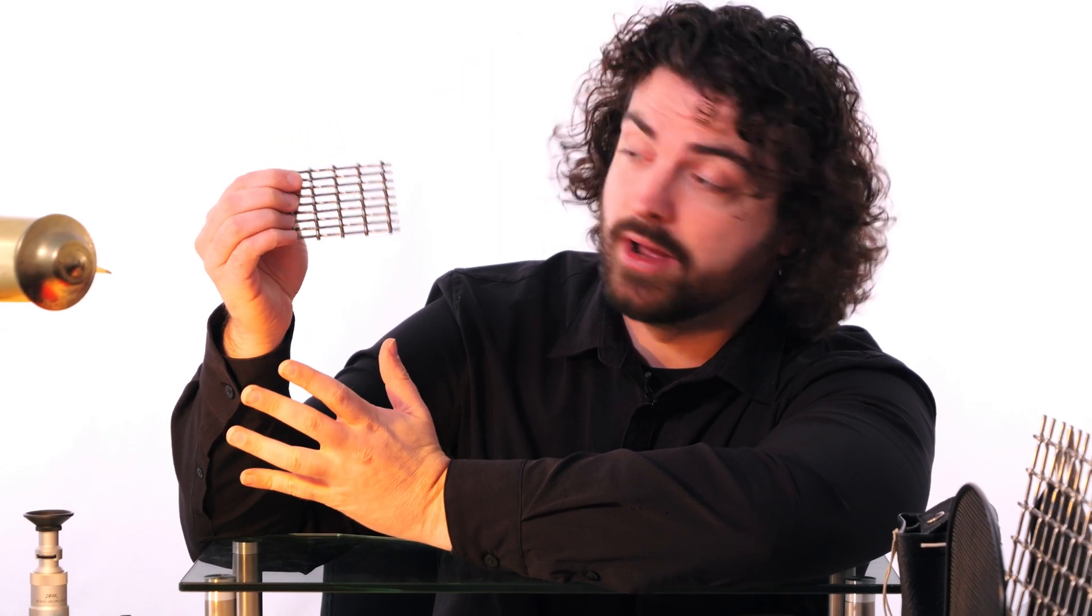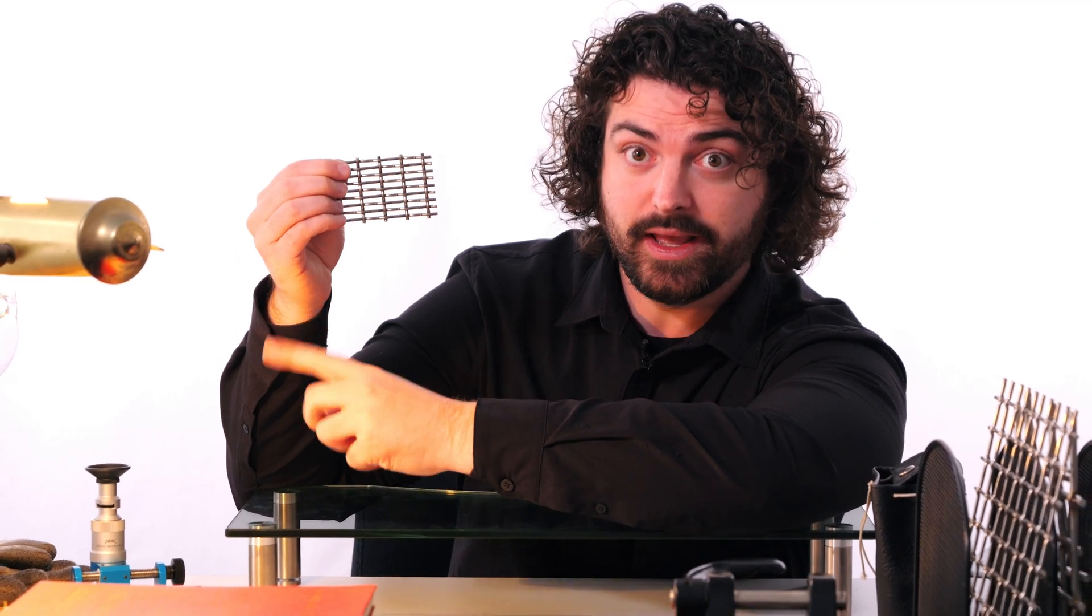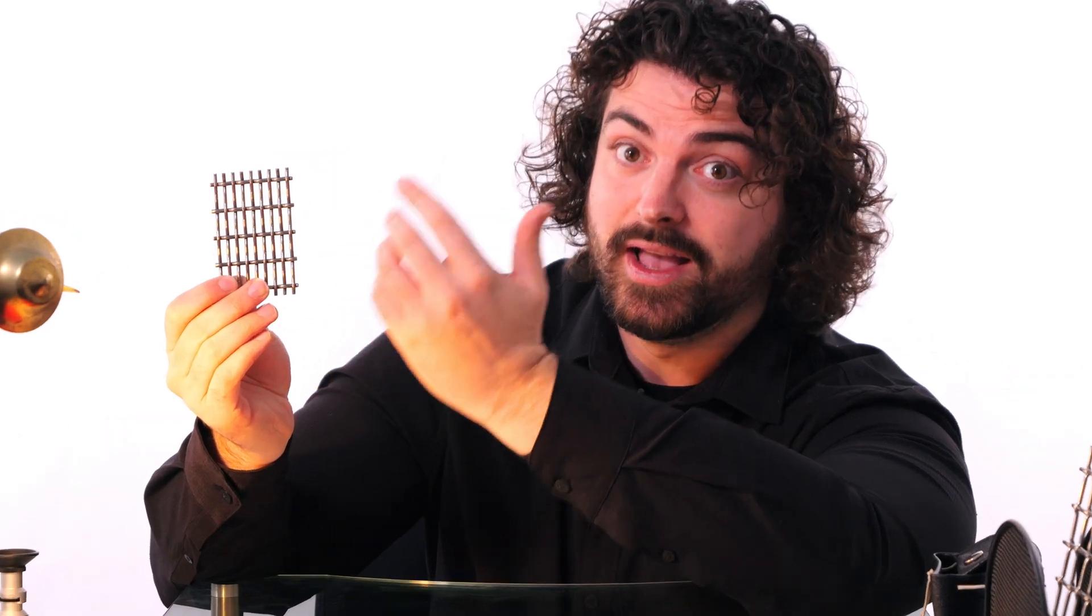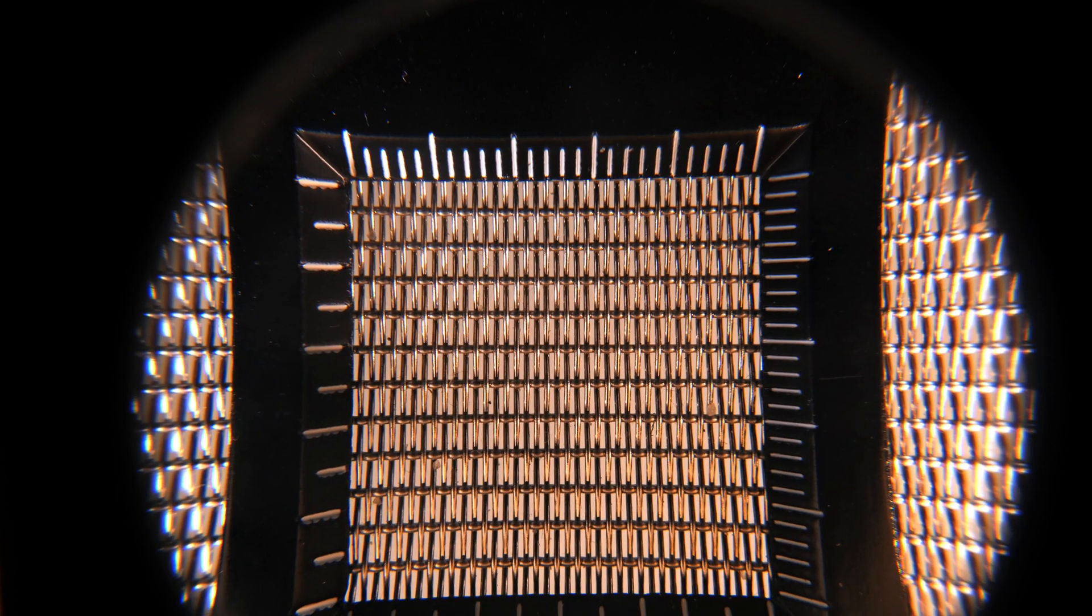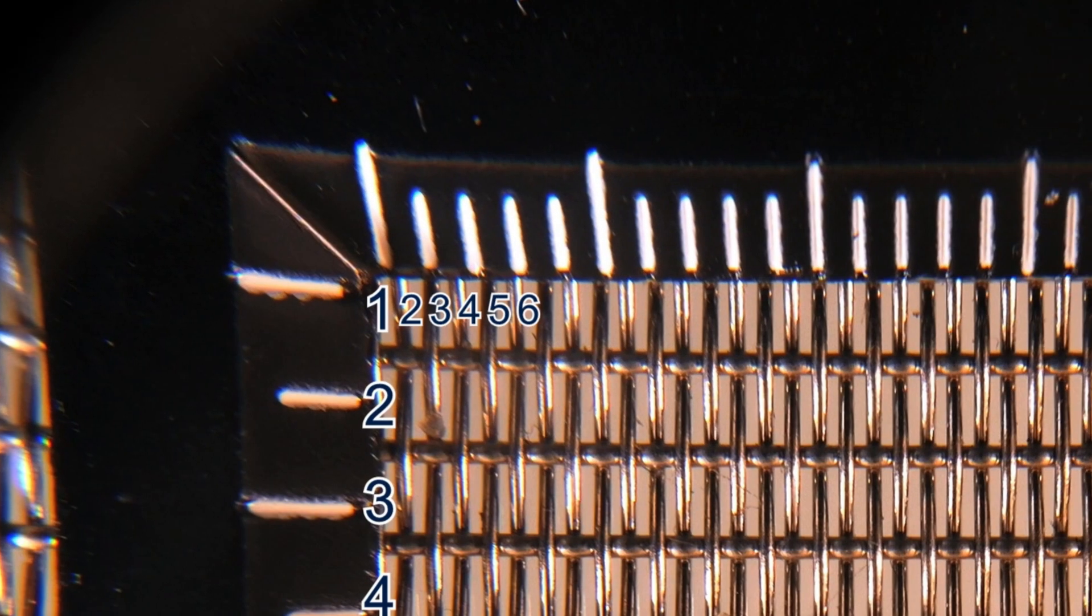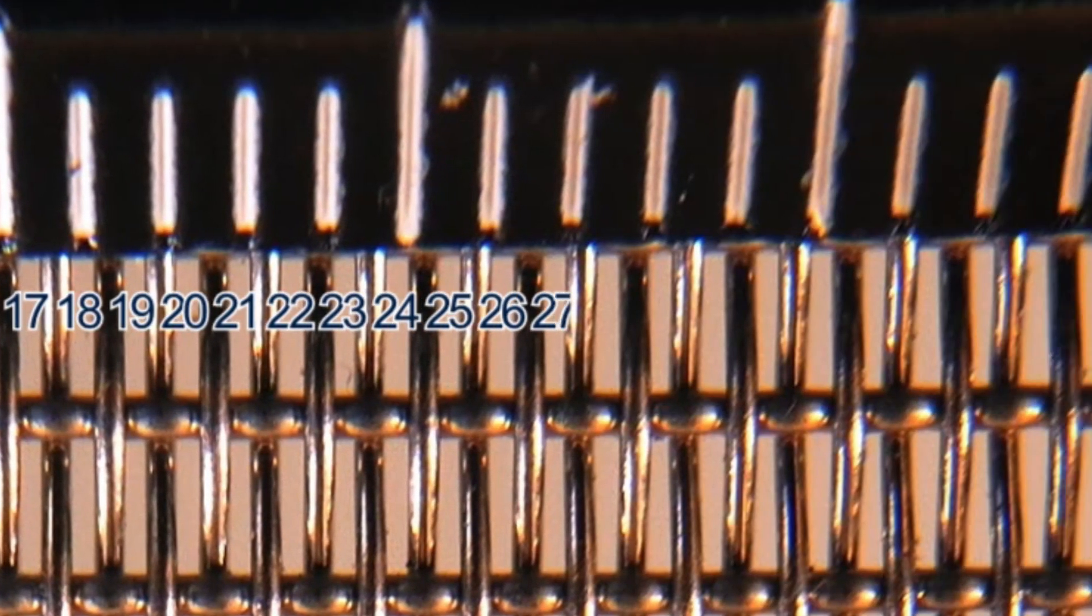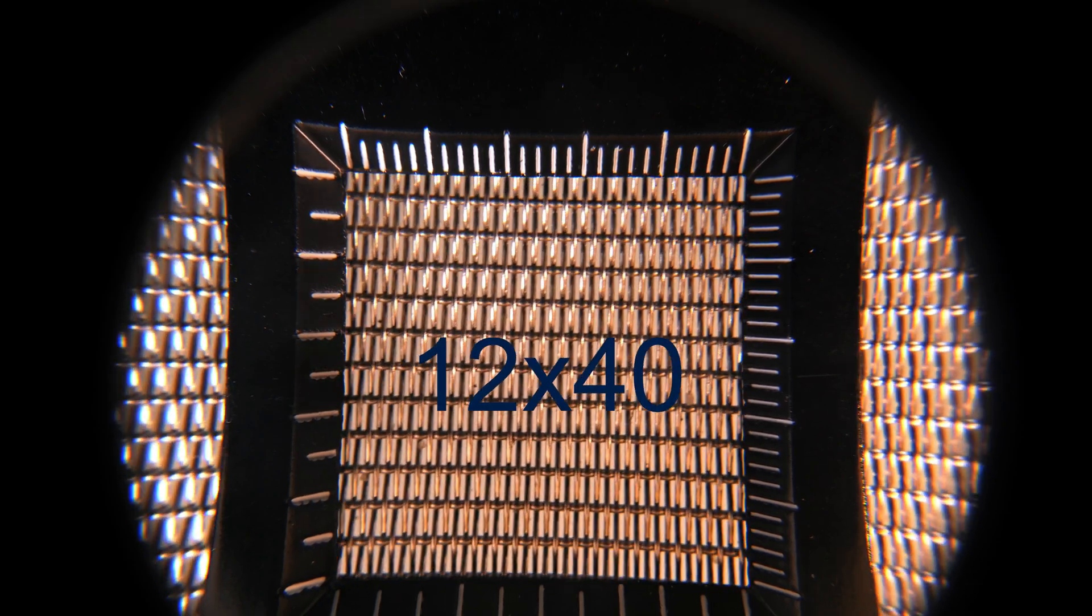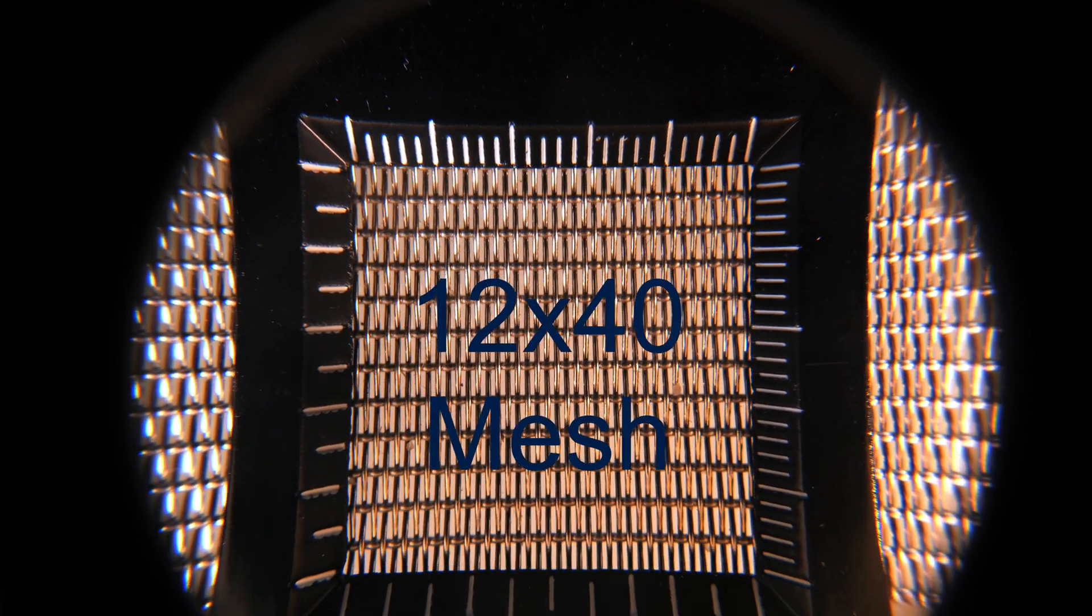But what about those non-square meshes? So generally speaking, when you're measuring the mesh count of rectangular mesh, you're not going to want to measure it broadly. You're going to want to measure it oblong. And since the measurement is different in the warp and weft directions, you're actually going to have to measure both. So looking at this mesh underneath the counting glass, we'll go one, two, three, four, five, six, seven, eight, nine, 10, 11, 12. And then one, two, three, four... 40. So the mesh count for this is 12 by 40. So this is a 12 by 40 mesh. And that's it. That's rectangular mesh. It's not so bad, right?